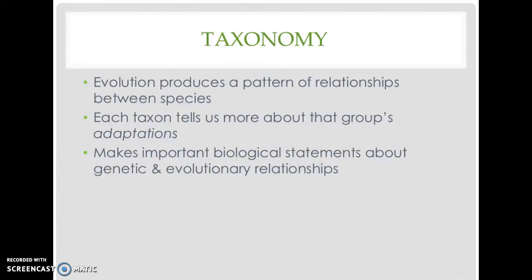Humans and all other primates belong to the taxonomic class of mammals, which includes a diverse group of animals consisting of bats, rabbits, horses, whales, elephants, wolves, and more. Yet we all share a distinctive set of traits, including being warm-blooded, having hair or fur, giving birth to live young, nursing those young, breathing air, and having relatively large brains in relation to body size.